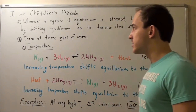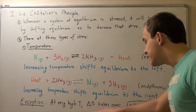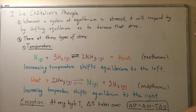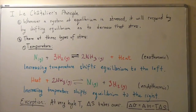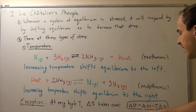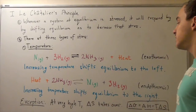Some exceptions to Le Chatelier's principle exist. At very high temperatures, entropy takes over, because the change in Gibbs free energy equals change in enthalpy minus temperature times change in entropy. If temperature is high enough and we have a positive change in entropy, it doesn't matter whether the reaction is endothermic or exothermic — with very high temperature and very positive entropy, we're always going to get a negative Gibbs free energy. So our reaction will always tend to proceed in the rightward direction.